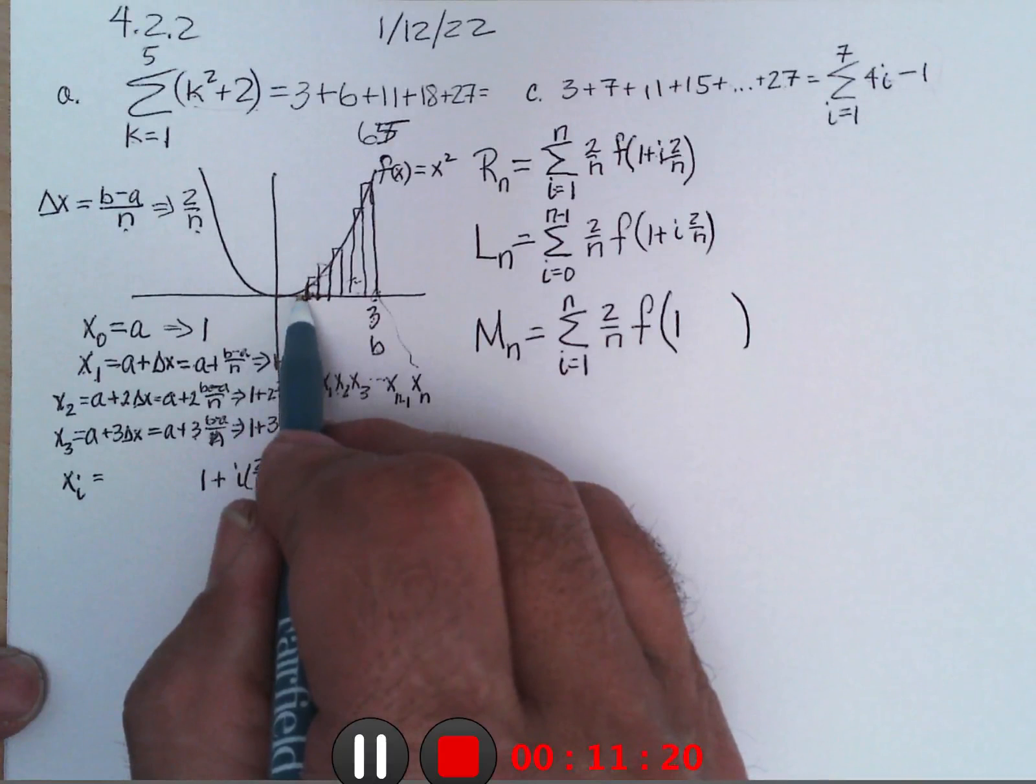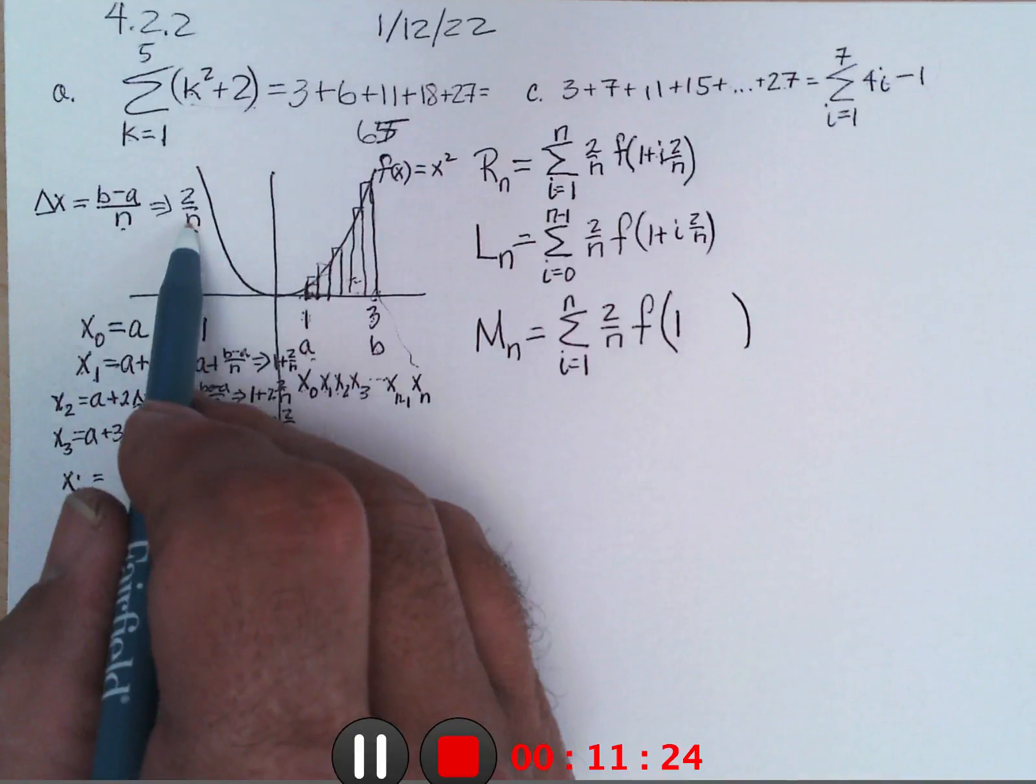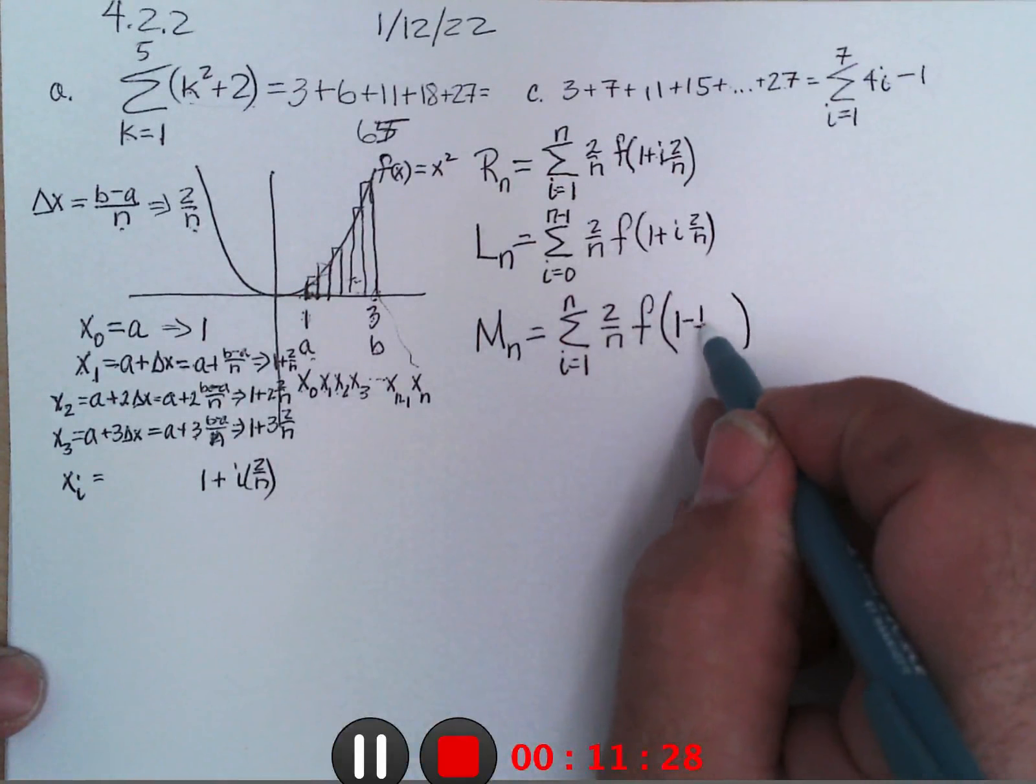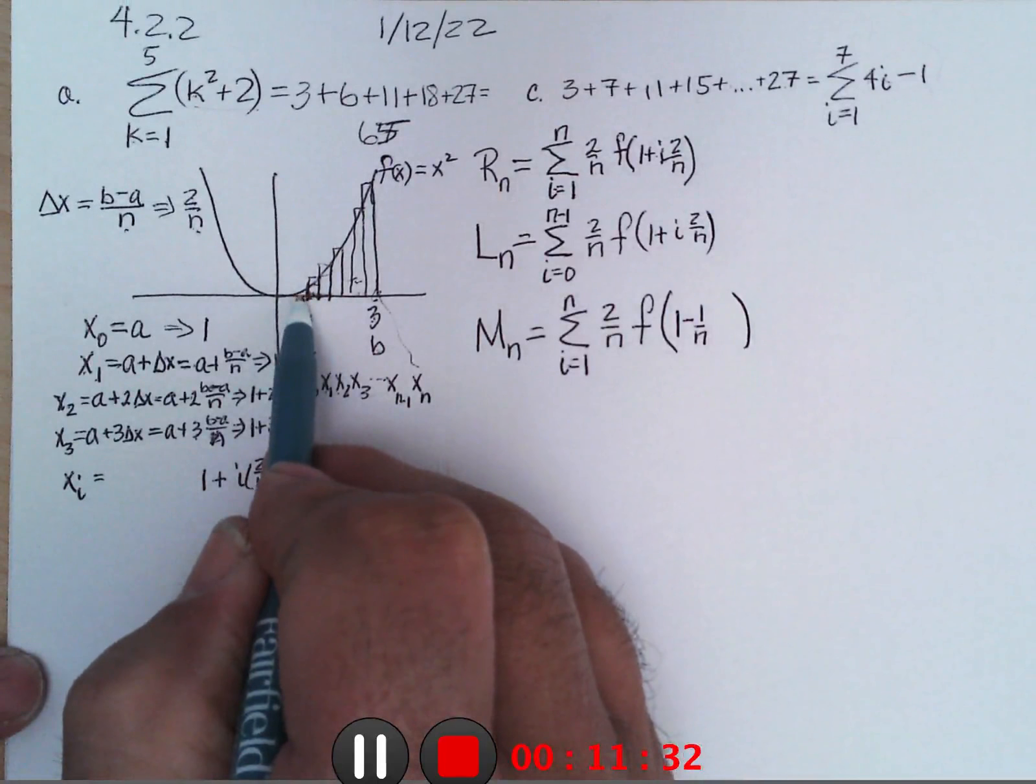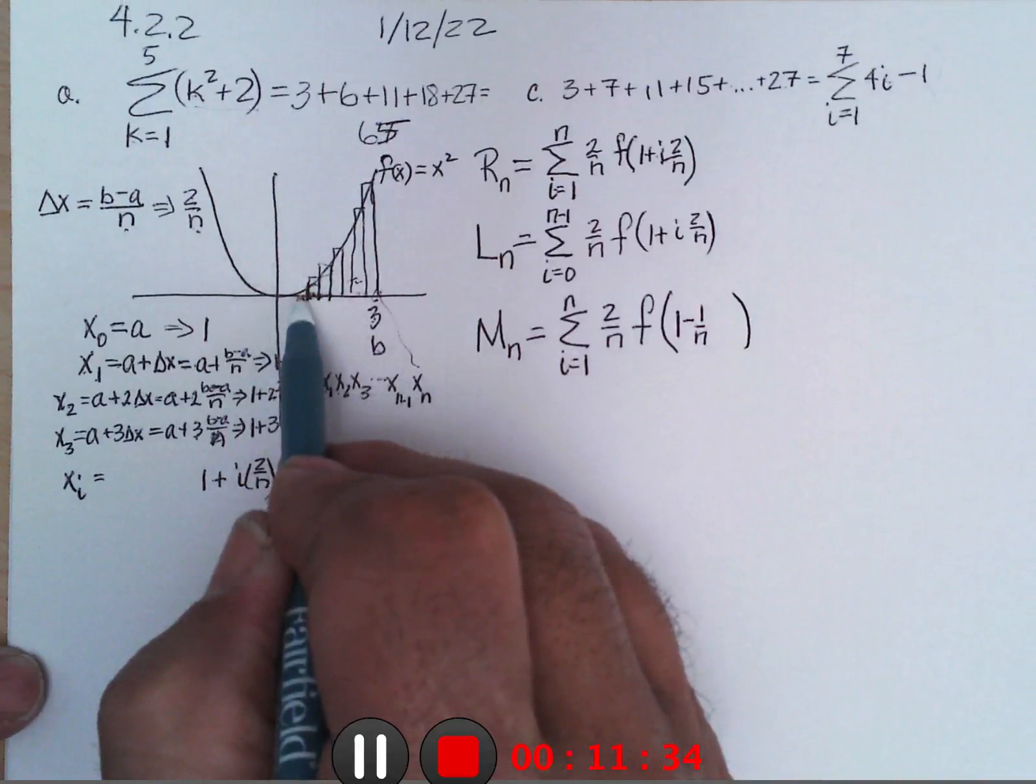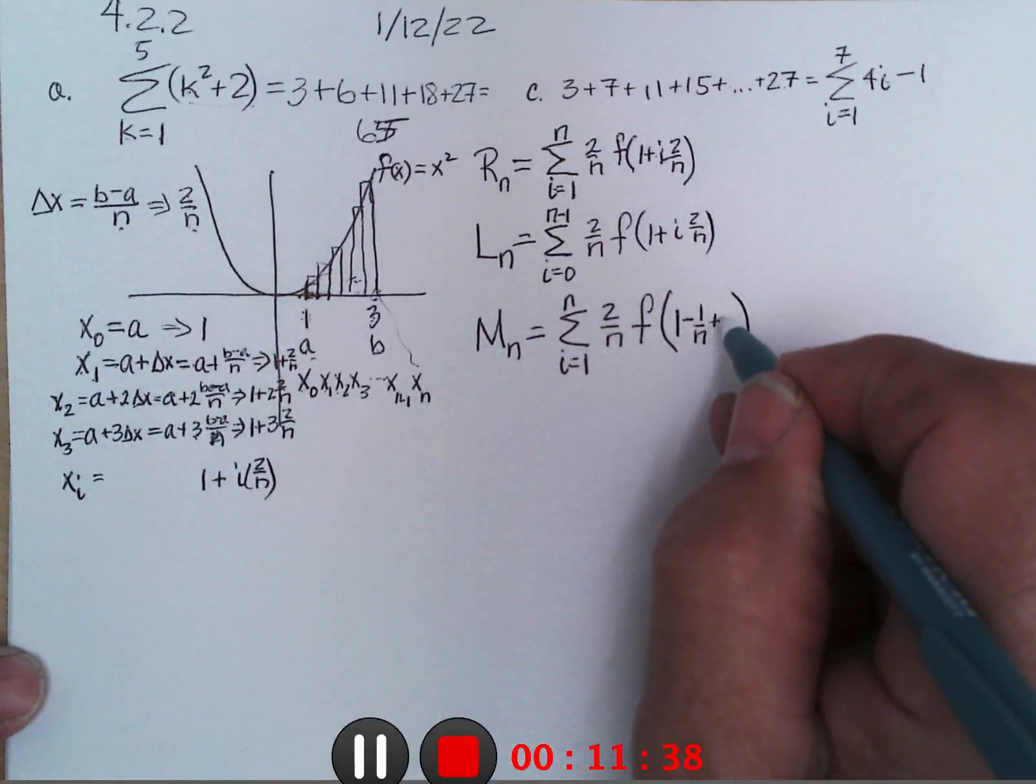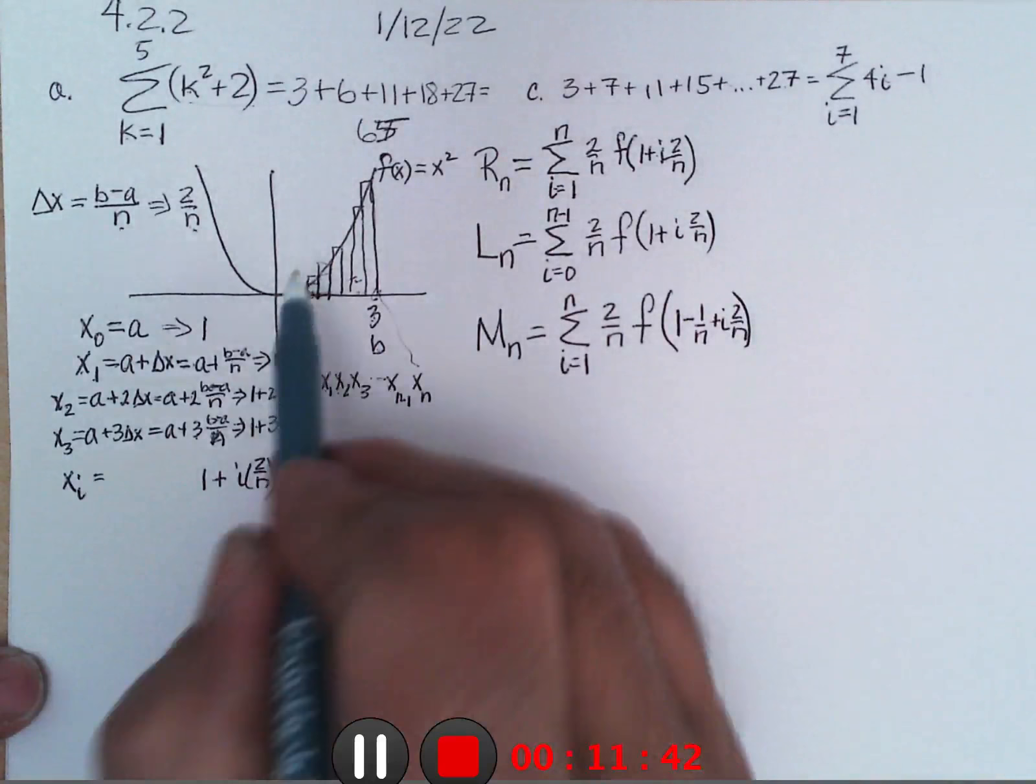So to do that, I'm going to start at a or 1, back up a half a width. Now the full width in this particular case is 2 over n, so if I back up a half a width, that would be back up 1 over n. So I'm going to move back a half, and then when i is 1 it would add 1 width, so plus i times 2 over n.